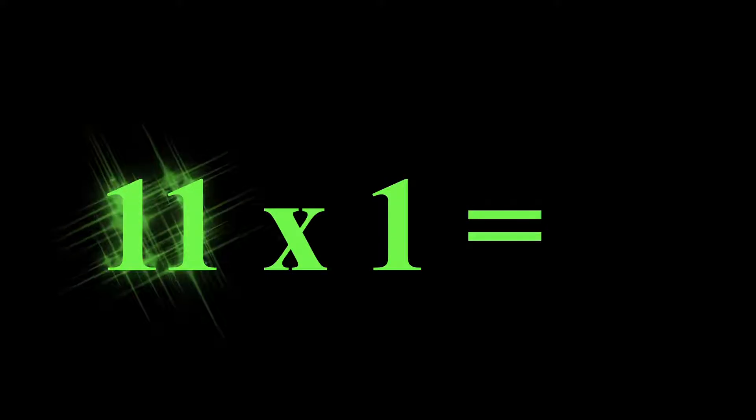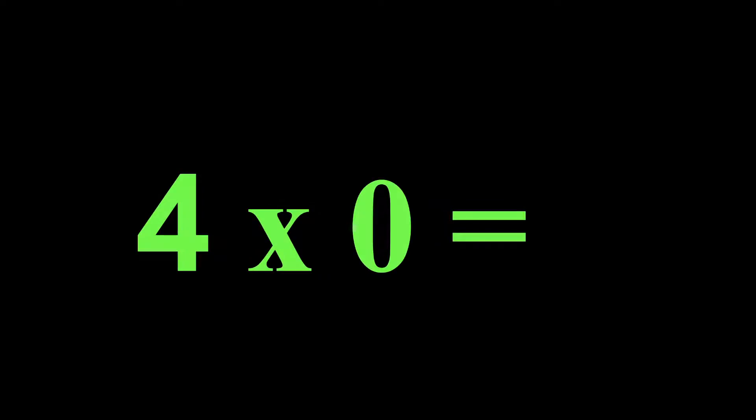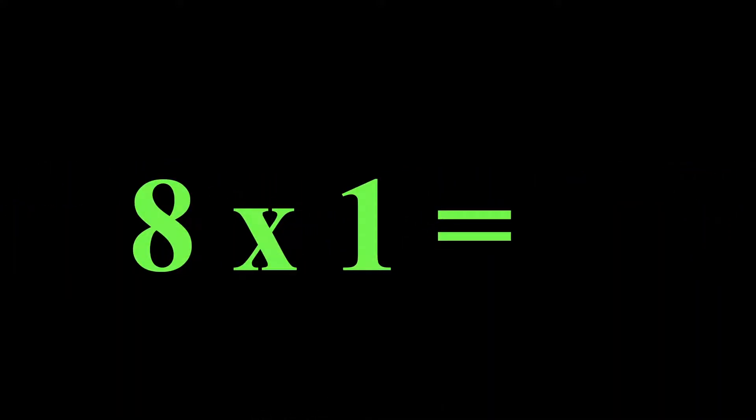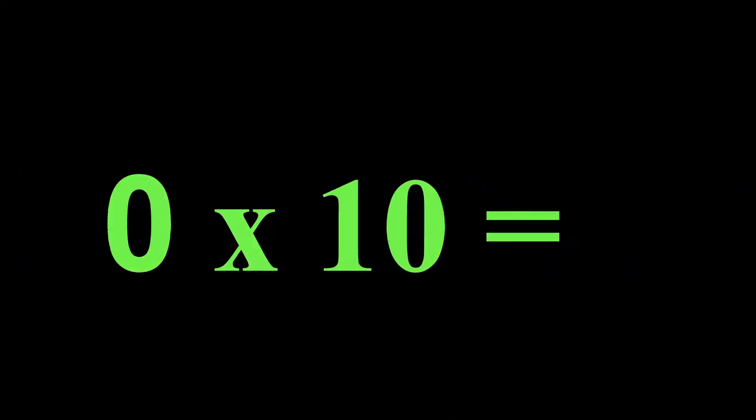Eleven times one is the one rule, so that equals eleven. Four times zero is zero. Great. Eight times one is the one rule, so that would be eight. Zero times ten would be our zero rule. So zero times ten is zero.